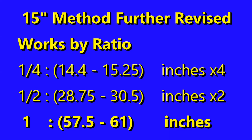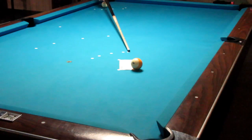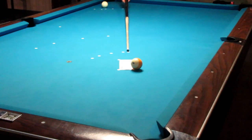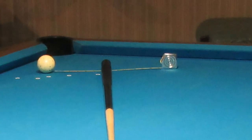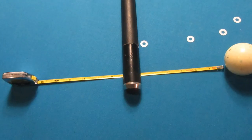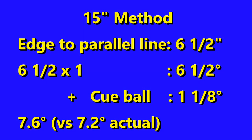Now I'll illustrate the last line of this chart with a 7.2-degree cut angle example. The measurement is about 6.5 inches, which is 6.5 degrees, and adding the cue ball gives another 1.125 degrees — giving 7.6 degrees versus the target 7.2. It's pretty close.